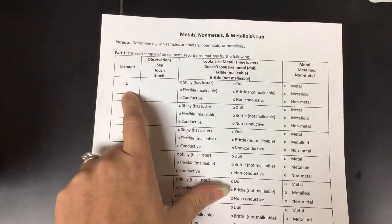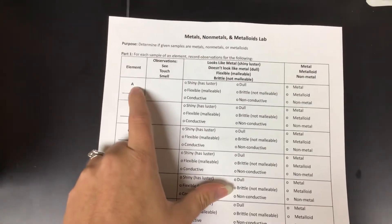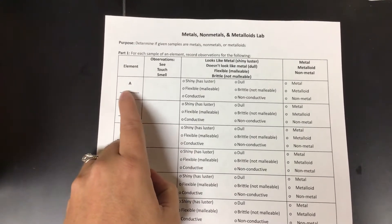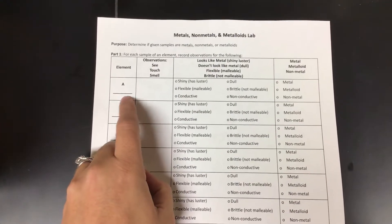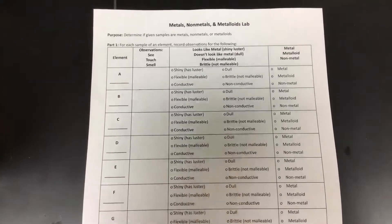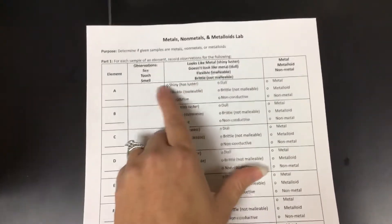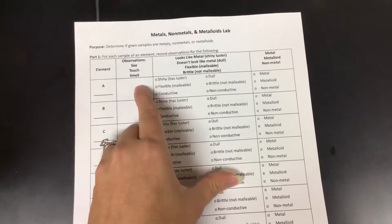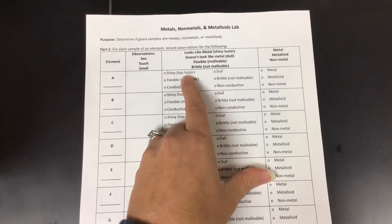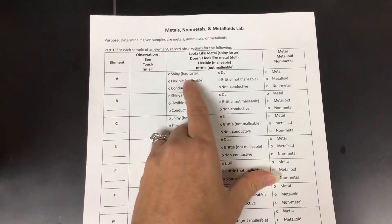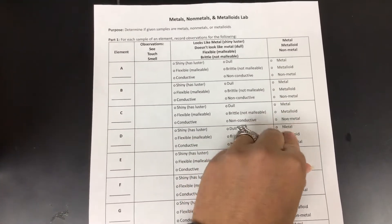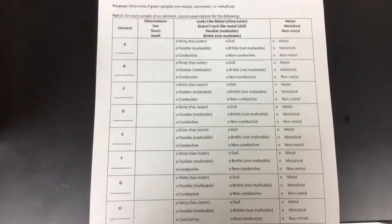We're going to look at element A first. When I go through each element, I'm going to tell you what the element is — make sure you write the name and symbol on your sheet. I'll do A as an example, but for the rest you're going to make your own observations: what colors do you see, what textures, what state of matter. Then decide whether it's shiny or dull, flexible or brittle, and conductive or not conductive. The metal, non-metal, metalloid column at the end you'll fill out after collecting all your data.